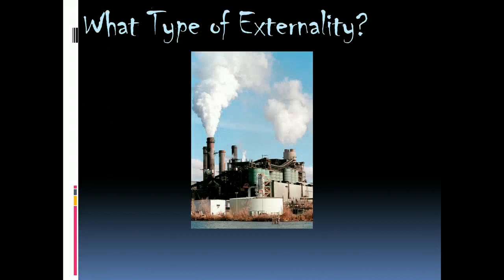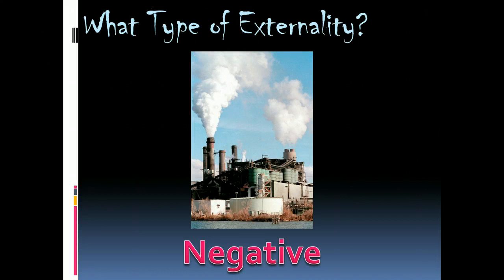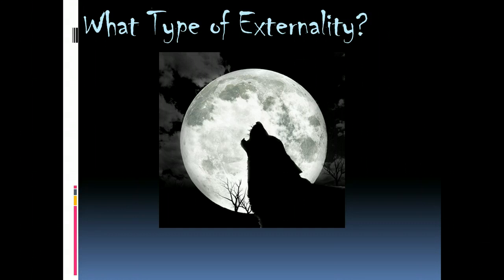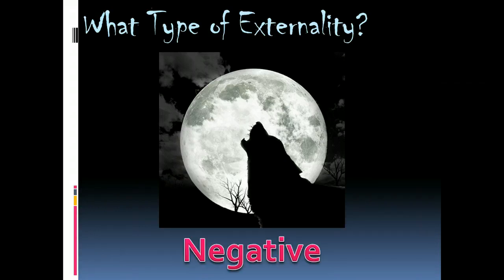For example, pollution is an externality — it creates a cost to other people in the form of dirtier air or water, so that's a negative externality. If your neighbor's dog barks at the moon all night, that decision to allow their dog to bark may not hurt your neighbor because he's used to it, but it certainly hurts you. It has an external cost, so it's a negative externality.